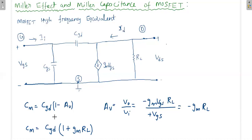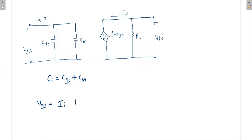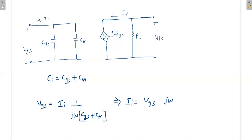Now that we know the value of Miller capacitance CM, we analyze the gain of the amplifier with its effect. The input current ia flows into CGS and CM in parallel, so effectively the input capacitance is CGS + CM. The voltage VGS equals the current times the impedance of the combined capacitance: VGS = I · 1/(jω(CGS + CM)).